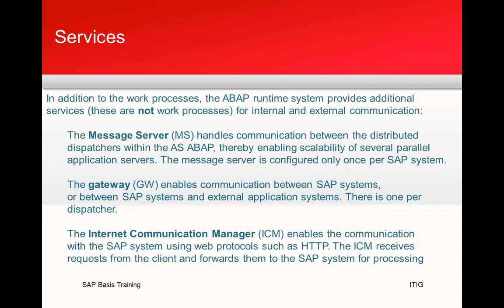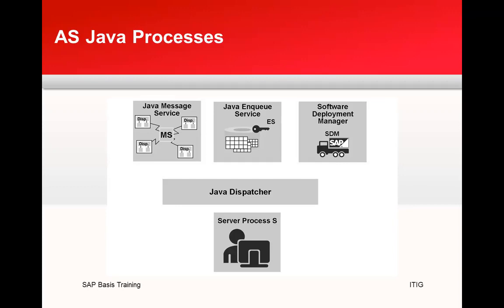On the services side: the message server handles communication between distributed dispatchers within AS ABAP, enabling scalability across parallel application servers — it is configured only once per system. The gateway enables communication between SAP systems and external application systems, with one per dispatcher. The ICM — internet communication manager — enables communication using web protocols like HTTP, HTTPS, and SMTP, receiving requests from clients and forwarding them to the SAP system.